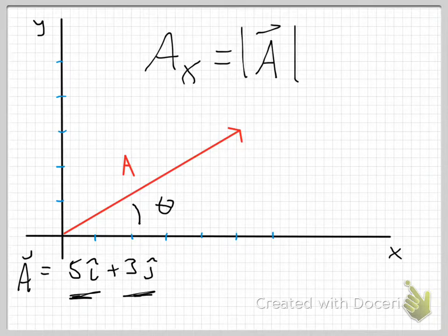Well, more mathematically rigorous, I should say. Alright. So the x component of A is going to be the length of A times the cosine of theta.